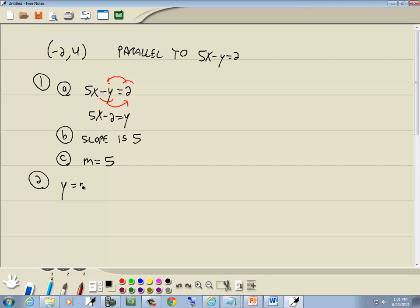Step 2. Plug in the given point for x and y. So put negative 2 in for x, 4 in for y. So we've got 4, M is 5, times negative 2, plus b.